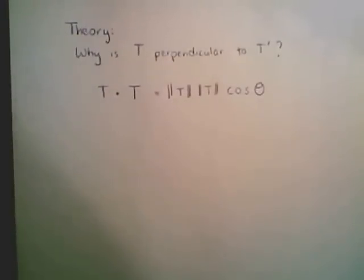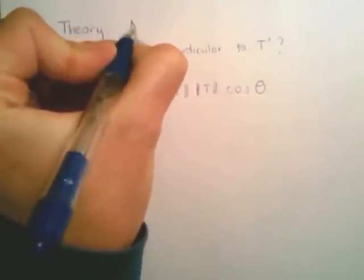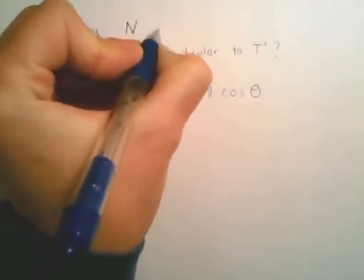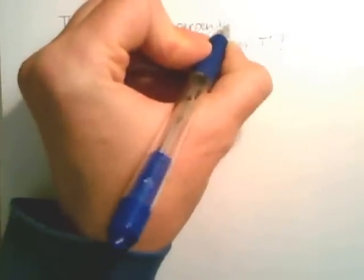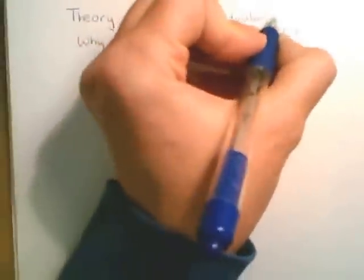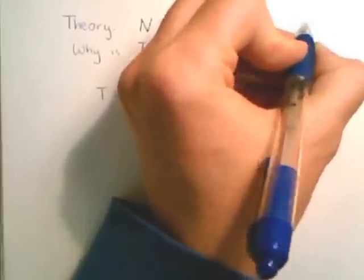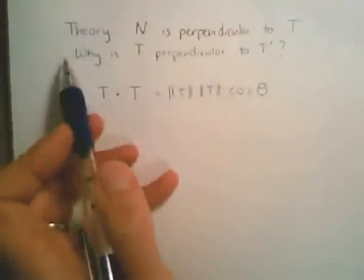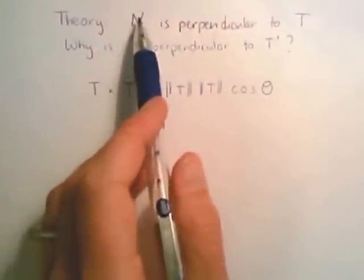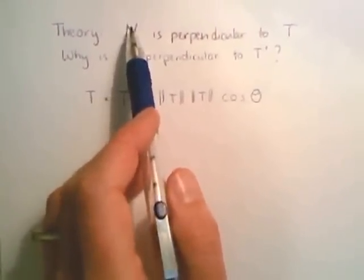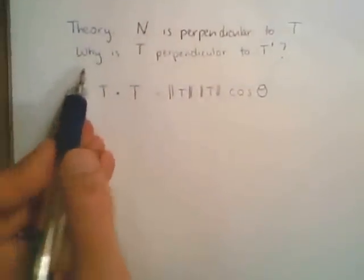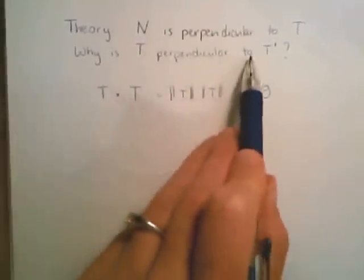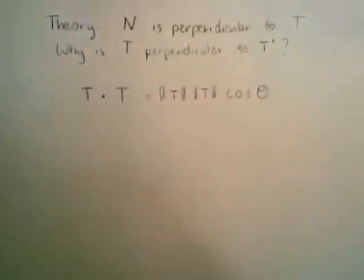So we just said that our unit normal vector is perpendicular to our unit tangent vector, right? And I want to know, why is that the case? Well, our unit normal vector is just the unitized version of T prime. So really what I'm asking is, why is T perpendicular to T prime?